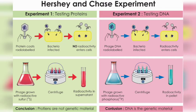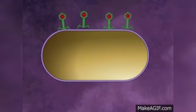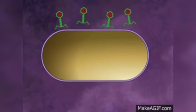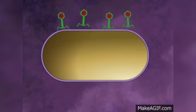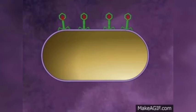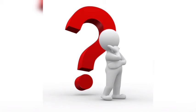For the final step of the Hershey and Chase experiment, they allowed the labeled phage to attach by their tail to bacteria and inject their genes into the host cells. Then they removed the empty phage coat by mixing vigorously in a blender, because they knew the genes must go into the cell. Their question was: what went in — the P32-labeled DNA or the S35-labeled protein?